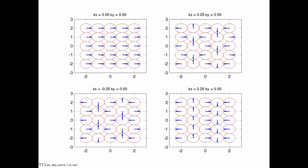As a reminder, here are some examples of 2D phasor fields or patterns. In particular, let's review this one: we have kx equals 0.25 and ky equals 0. This means the period in the x direction is 4 — that corresponds to the space it takes for the phasor orientation to return to the same orientation. Since ky equals 0, there's no variation in y, so along any column the phasor orientations do not vary.